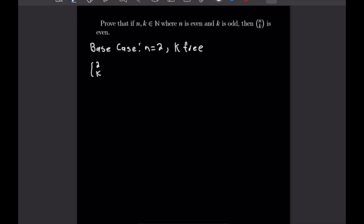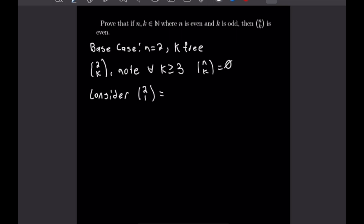We consider 2 choose k. For all k greater than or equal to 3 — keeping in mind k is odd — n choose k equals 0. So we only need to consider k less than 3, which gives just one case: 2 choose 1. And 2 choose 1 is of course equal to 2, which is even. So our base case is confirmed.